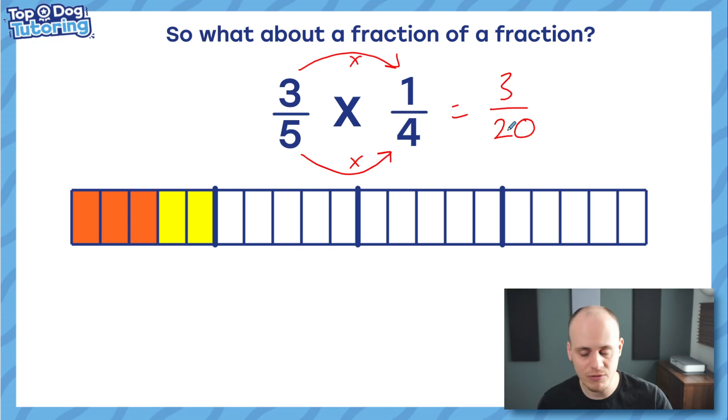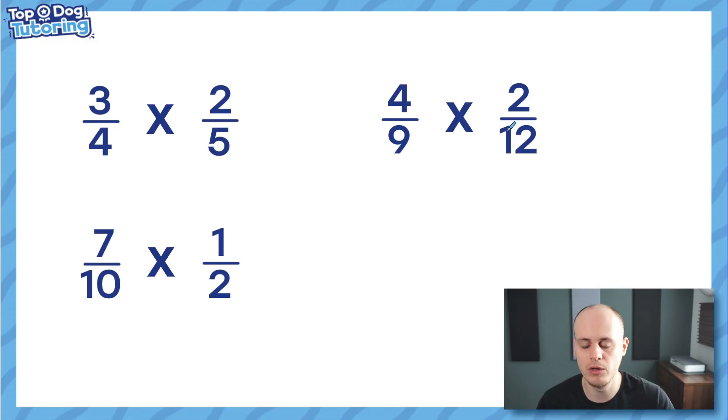No, it works every single time. So now you've understood the concept and the idea of multiplication being of, we can solve these kind of questions really quickly. They're probably the easiest fractions questions to solve because the rule is simply this. Multiply the numerators together. Three times two is six. Multiply the denominators together. Four times five is 20. And that is the answer. That's it.